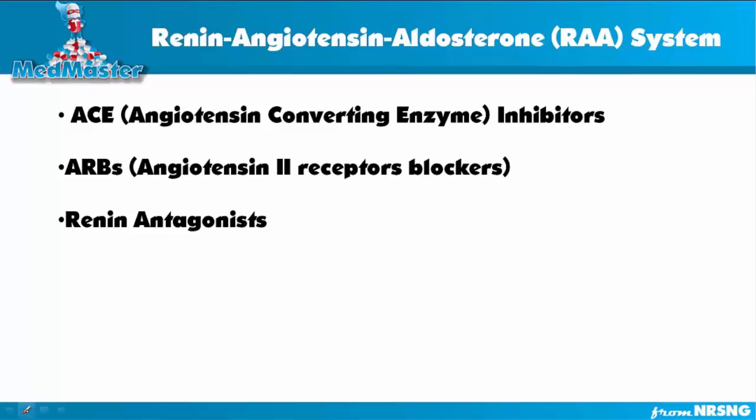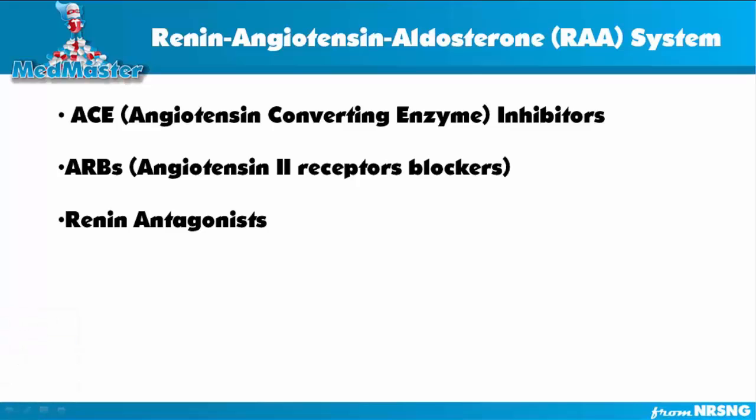We're going to talk about the RAA system in our body. The reason we're covering it in this video is that it will help to better understand the angiotensin converting enzyme inhibitor medications, ARBs which are also called angiotensin 2 receptor blockers, and renin antagonists. A better understanding of the RAA system will really help you understand these three pharmacological classes of drugs, including their side effects and why we use them for particular diseases.